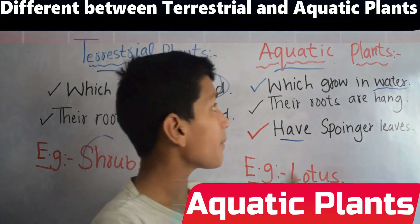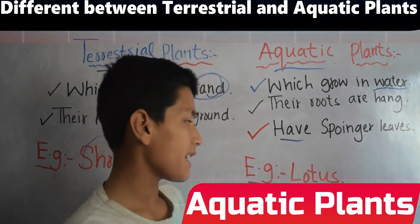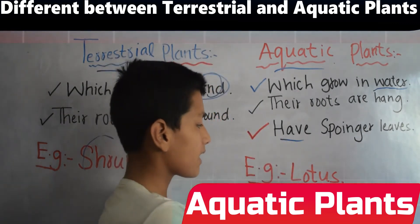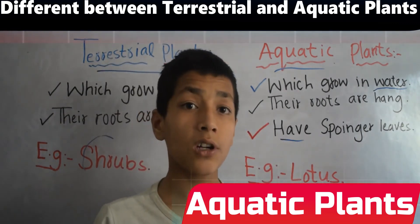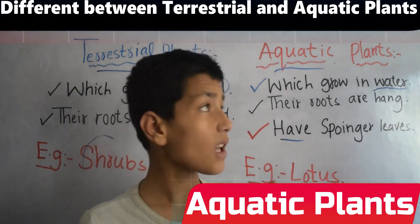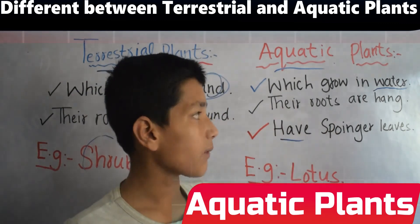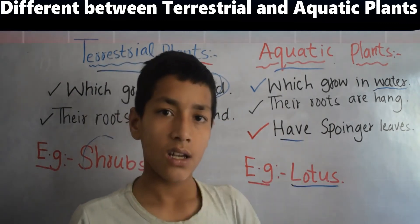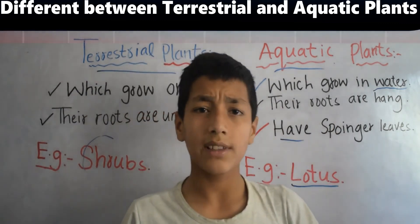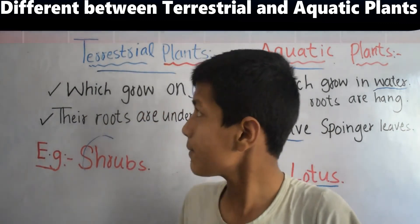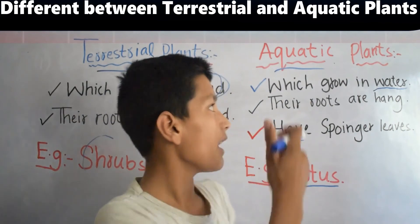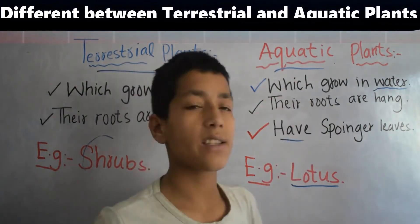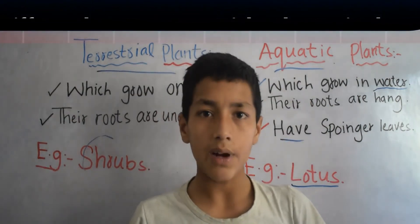A common example of aquatic plants is the Lotus. Lotus is the common example of aquatic plants. This was the difference between terrestrial plants and aquatic plants. Thanks for watching.